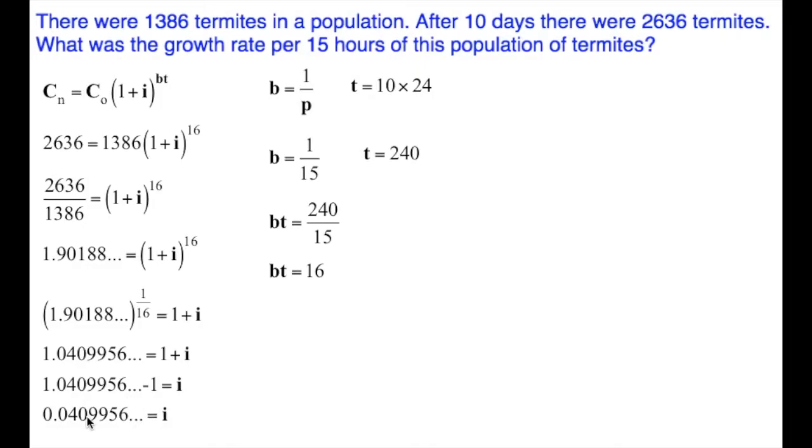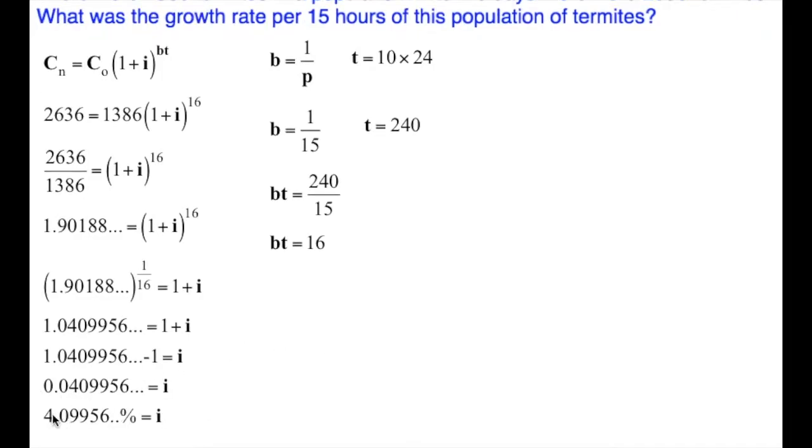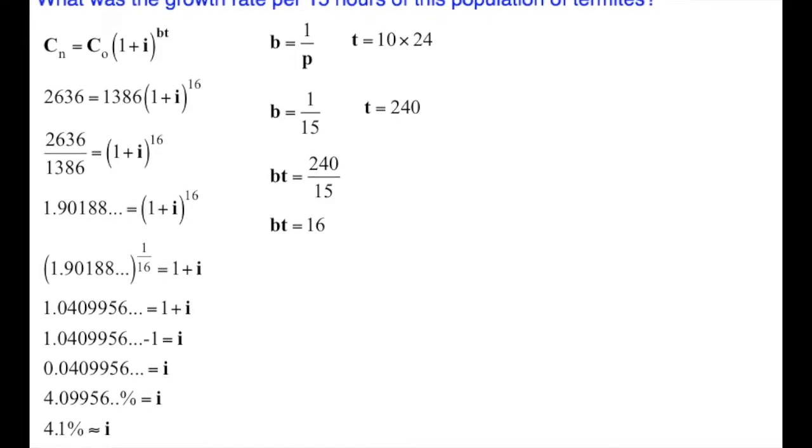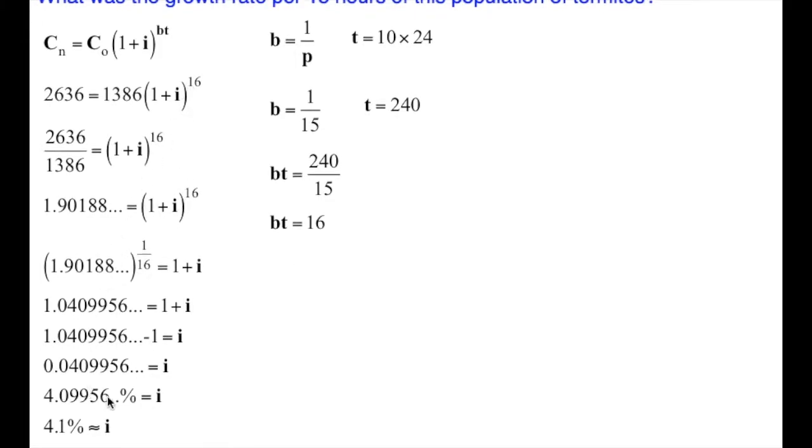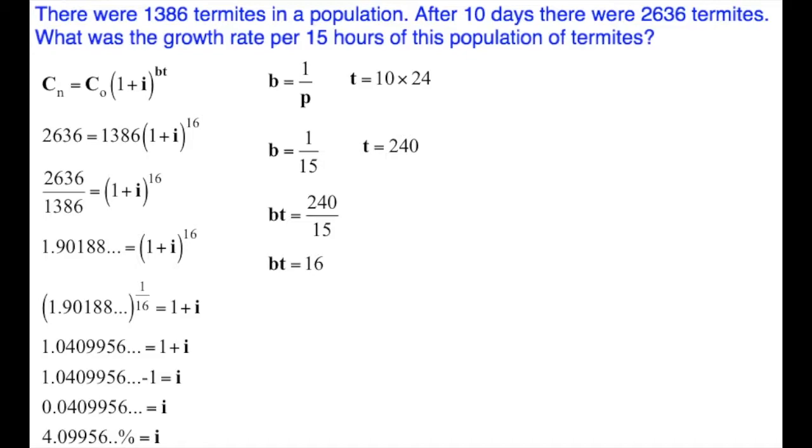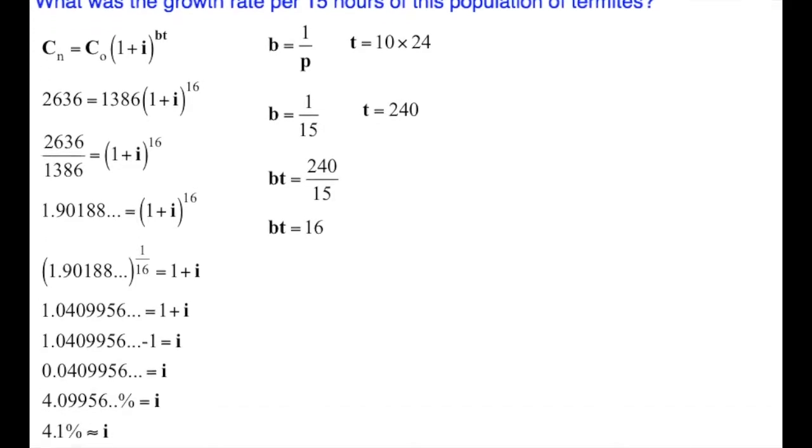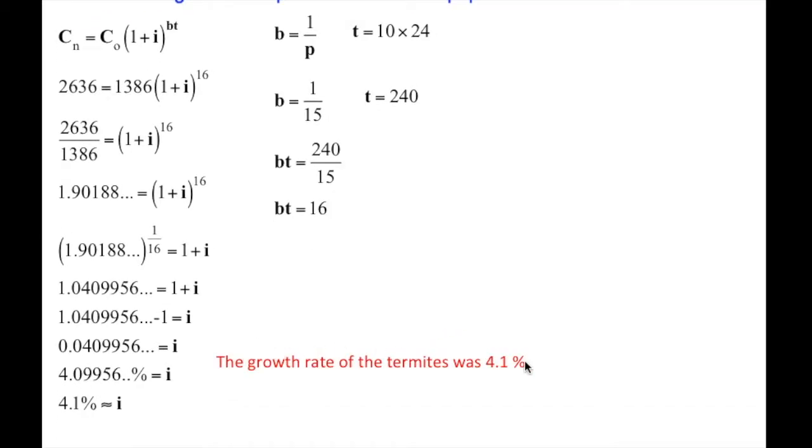It has a decimal, so to convert it to a percent, I'm going to multiply it by 100, 4.09956. If I round that to the nearest tenth of a percent, that's going to be 4.1%. Our growth rate is 4.1%. What was the growth rate per 15 hours of this population of termites? The growth rate of the termites was 4.1%, and that's our final answer.